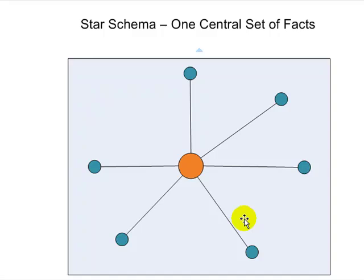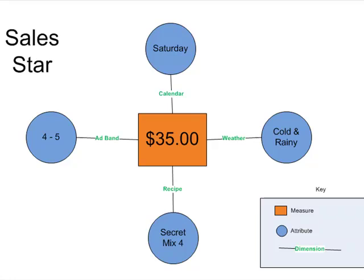From a strictly database development standpoint, the star schema represents a many-to-many scenario. Let's take a look at our lemonade stand's main star schema—it's the sales star.